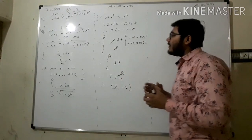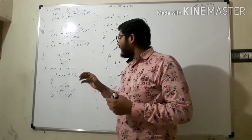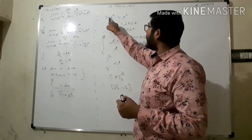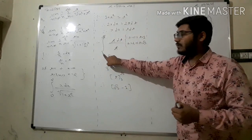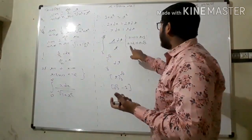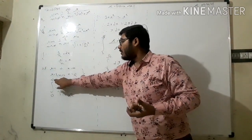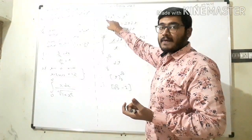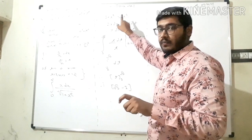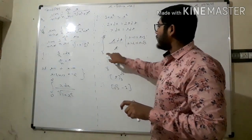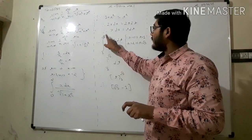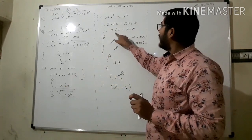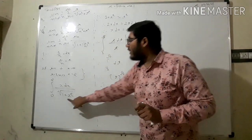Now putting x equal to zero, we get t equal to one. Then putting x equal to two, we get t squared equal to four plus one equal to five, so t equals under root five. So the new integration limits are from one to root five.